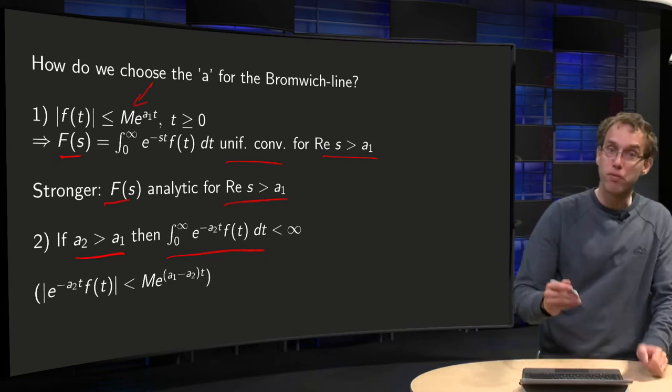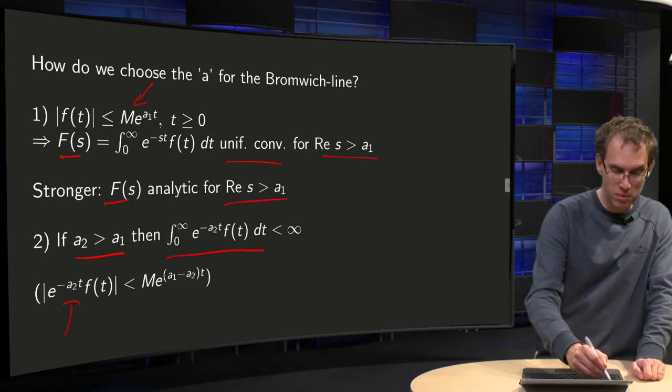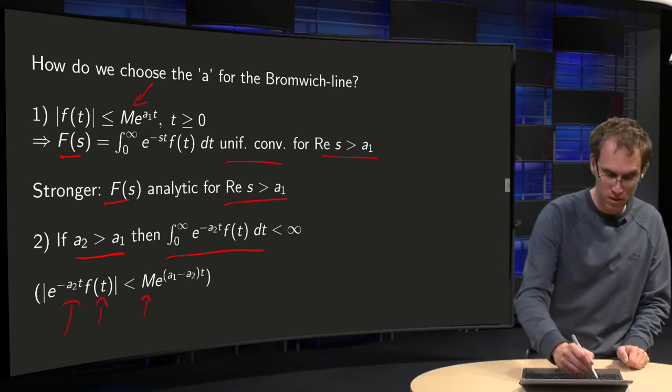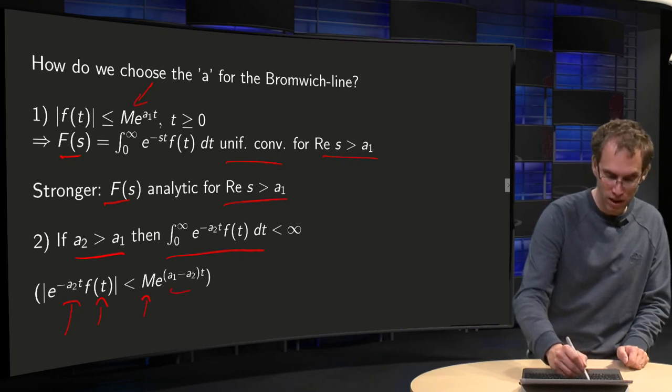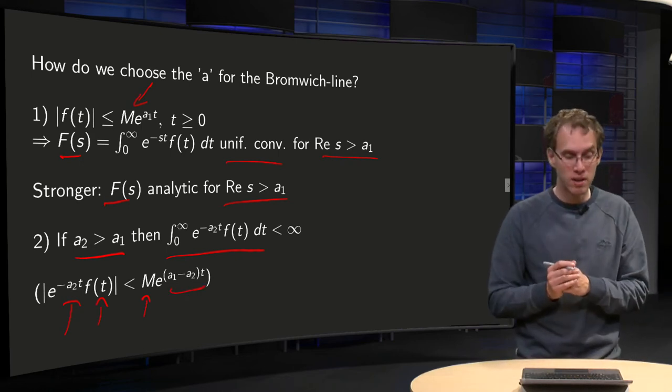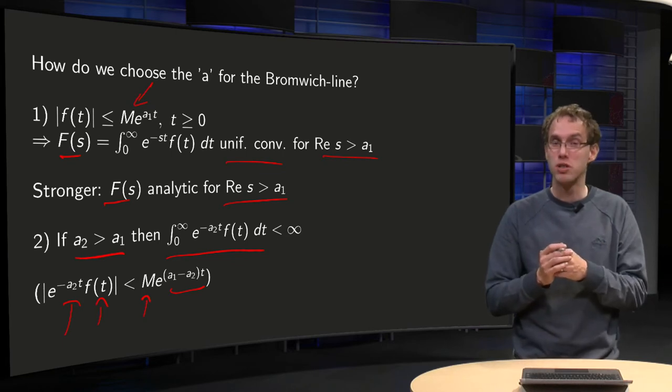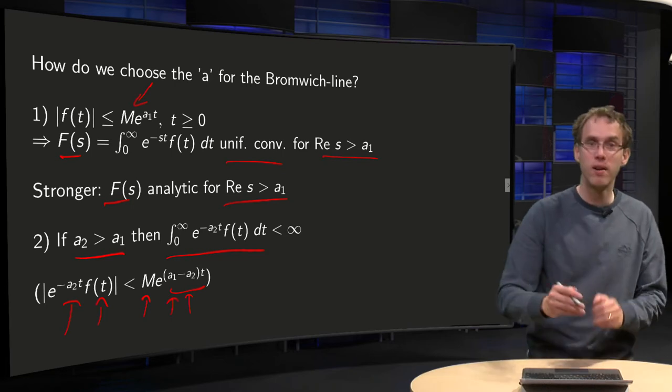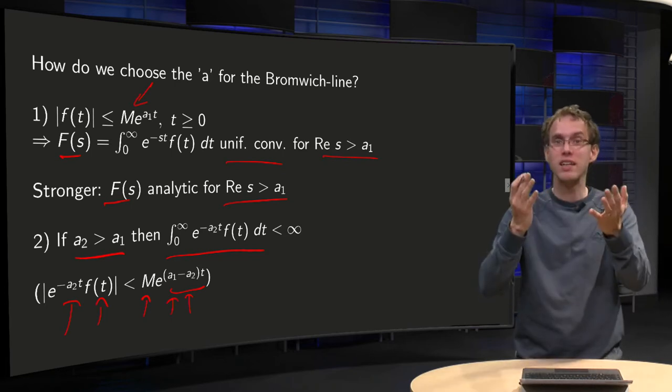Well, the norm of e to the power minus a₂ times t times f(t) is smaller than M times e to the power (a₁ minus a₂) times t. So if you make sure that a₂ is strong enough, larger than your a₁, then you will get e to the power minus t.